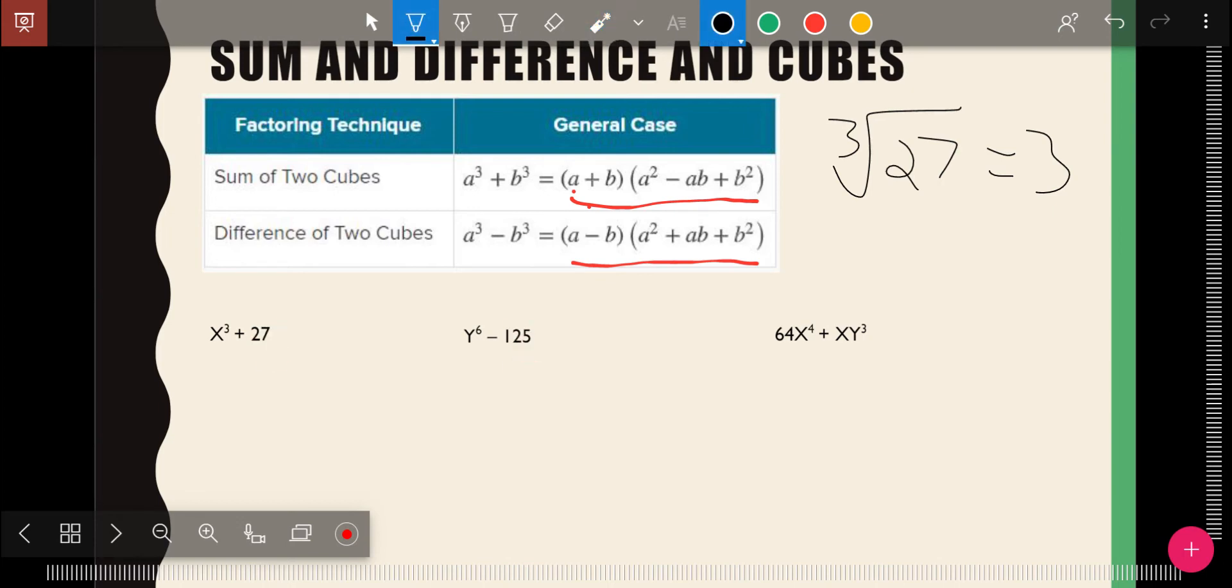And so, for the first one, I'm just going to rewrite it as X to the third. That would make X cubed. And that means A here is just X plus 3 to the third. And so B here is just 3. And so it's a sum of two cubes. And so A is X, B is 3. And we plug into this formula. And so it's just going to be X plus 3. A squared is X squared. Minus AB is X times 3, which is 3X. Plus B squared, which is 9.